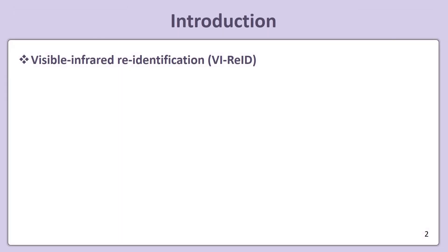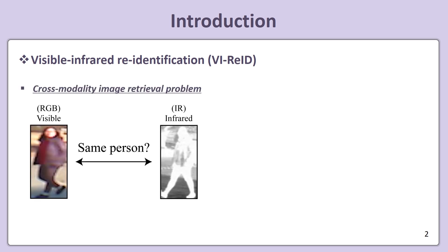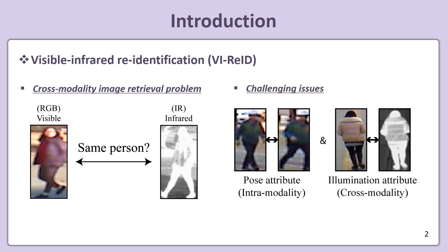This paper addresses visual infrared person re-identification, which aims to match people observed from RGB and IR cameras. This task is quite challenging due to the additional cross-modality discrepancy.